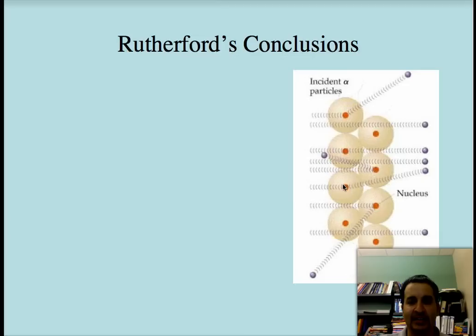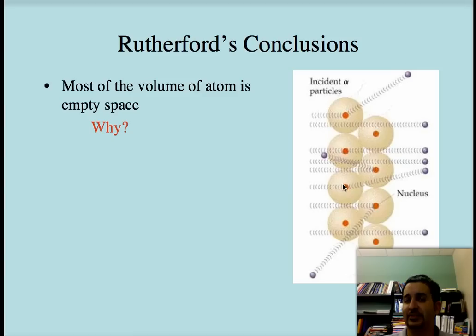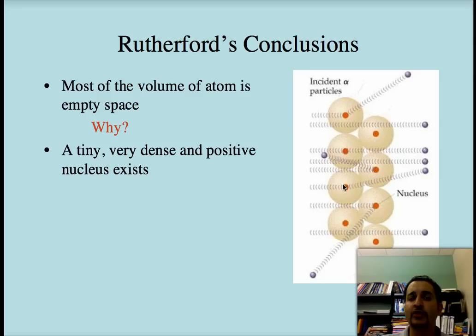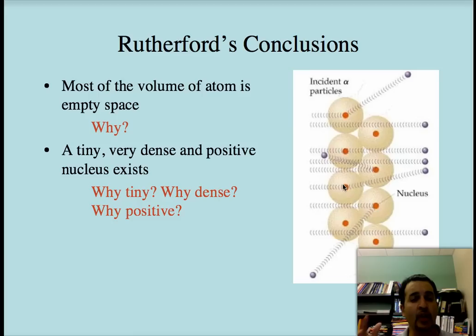Same like we did for Thomson, I want you to try to figure out why he came to this conclusion. So, I want you to write the reason you think in your notes for what and why he came up with this idea. One, most of the volume of the atom is empty space. Two, there is a tiny, highly dense, and positive nucleus. I want you to talk about each one of those three things. Why is it tiny? Why is it dense? And why is it positive?